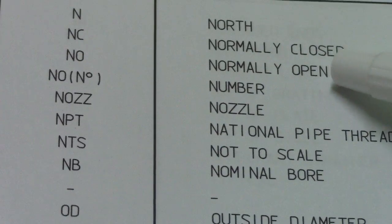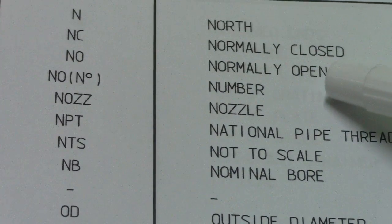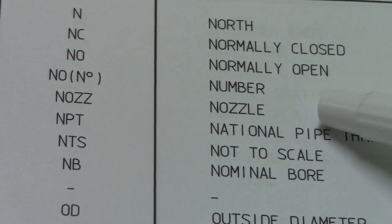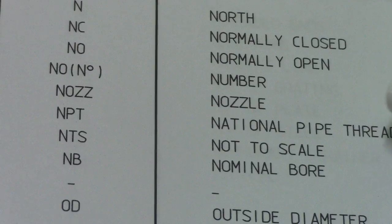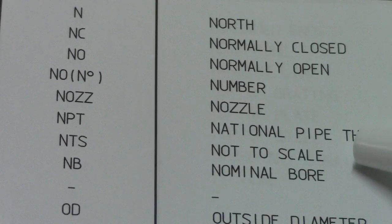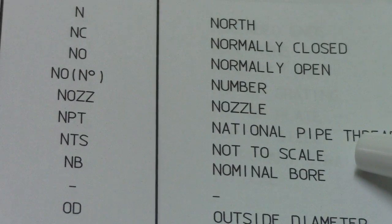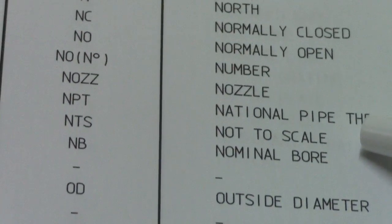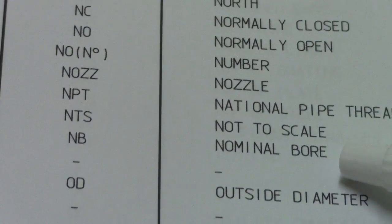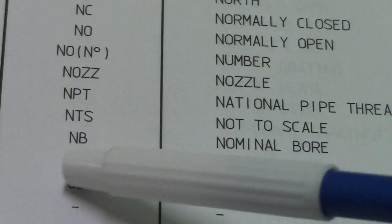N is north, NC is normally closed, NO is normally open, NUM is number, NOZ is nozzle, NPT is national pipe thread, NTS is not to scale, and NB is nominal bore.